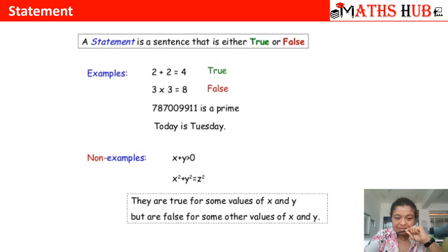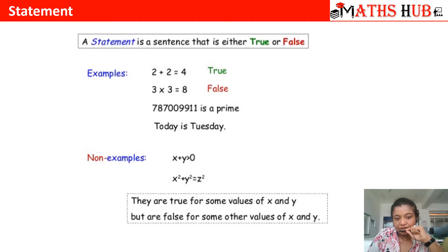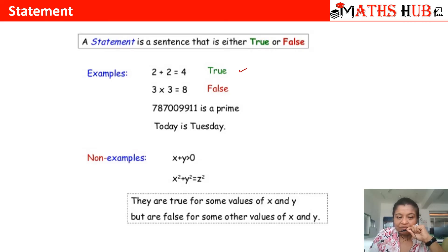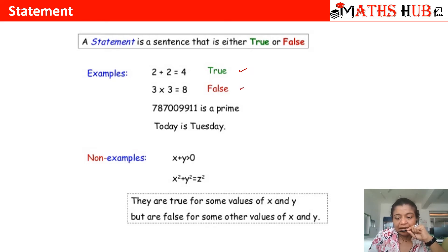Let us take some statements and see whether they are propositions or not. When we say 2 plus 2 is equal to 4, it is universally true, so this is a statement. When we say 3 into 3 is 8, everybody will say it is not 8, it is 9 — so again, this is a statement.